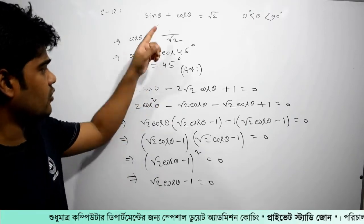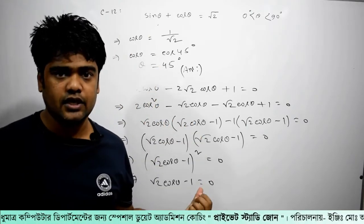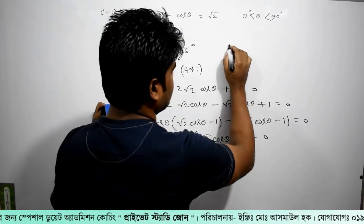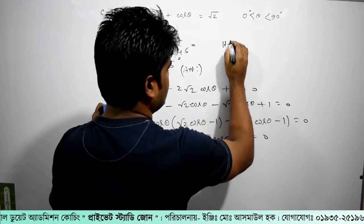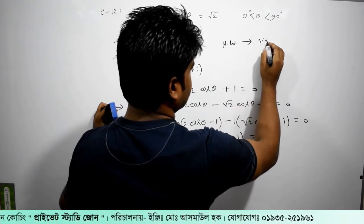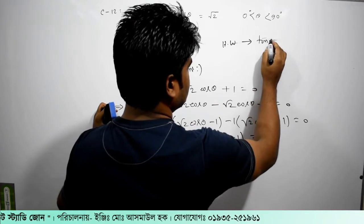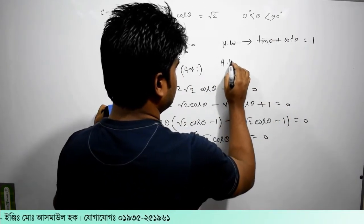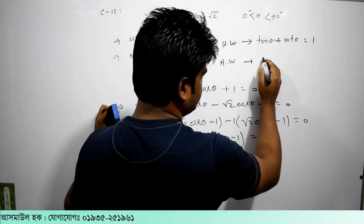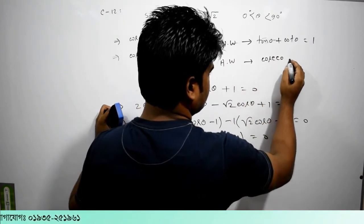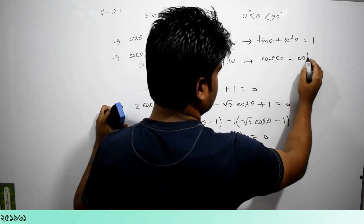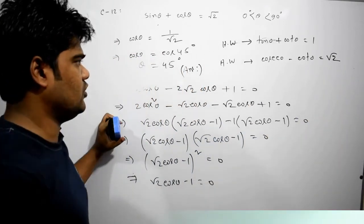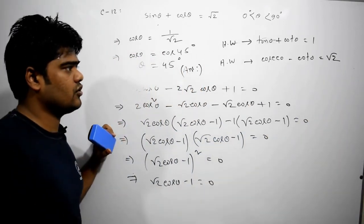We have to find the answer and figure out how to do it. A is W sin — sorry, tan theta. Tan theta plus cot theta equals 1. Our vector is W cos theta — cos theta minus cot theta equals 2, which is root 2.